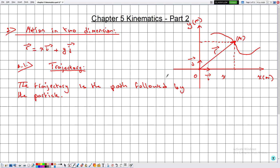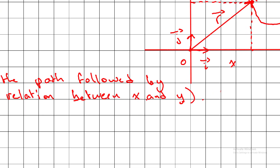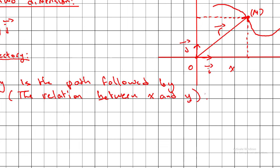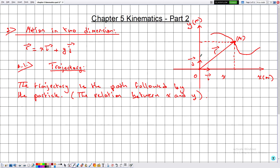Mathematically, the trajectory is the relation between the variables x and y, where x represents the position of particle M along the X axis and y represents the position of M along the Y axis.